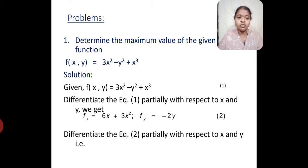Let's differentiate equation 2 partially with respect to x and y. When I differentiate fx again partially with respect to x, I get fxx, which is nothing but 6 plus 6x. fyy would become minus 2. fxy is nothing but ∂²f/∂x∂y, which is the partial differentiation of fy with respect to x, which is 0.